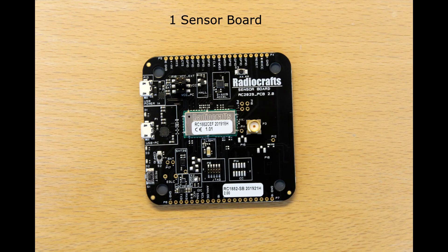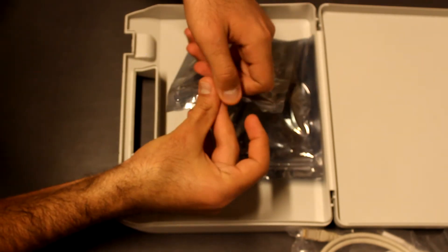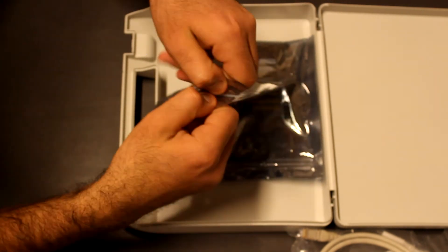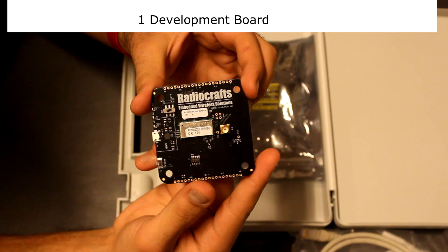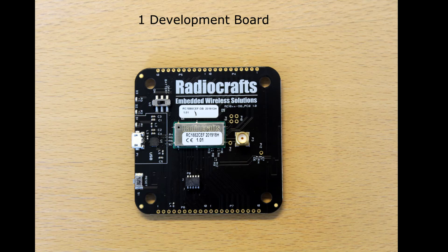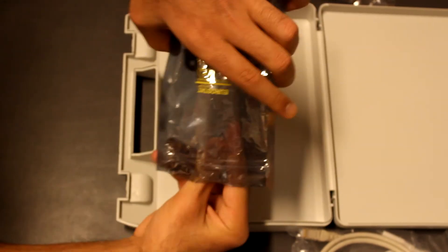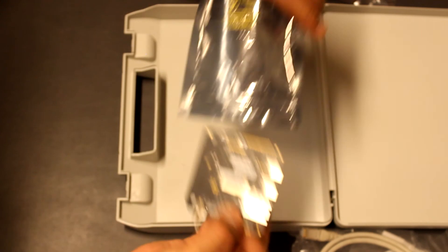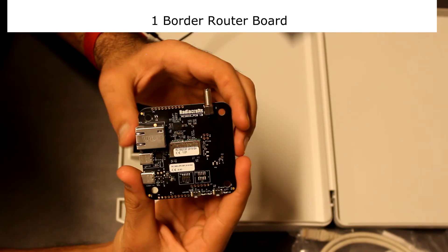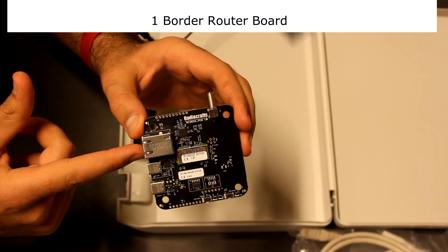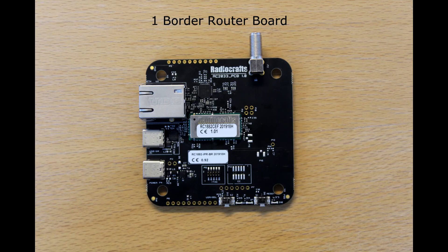The sensor board comes equipped with seven industry standard sensors, such as a temperature and humidity sensor. The sensor board is factory setup as leaf node. The development board has no external sensors and is factory setup as mesh router. And lastly, we have the border router board with Ethernet connectivity. The border router board is setup as root node.